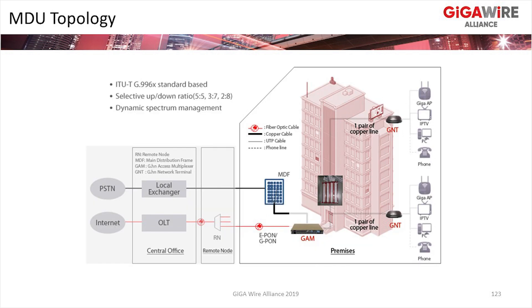Here's an MDU topology highlighting how this has been widely deployed by Korea Telecom. Similar to what you do with the G.fast DPU, you have a GAM — a G.HN access multiplexer or DPU — connecting to existing in-building wiring that can be twisted pair, coax, or a combination. Fiber-fed again, basically leveraging the in-building wiring, and then a G.HN CPE inside each suite.